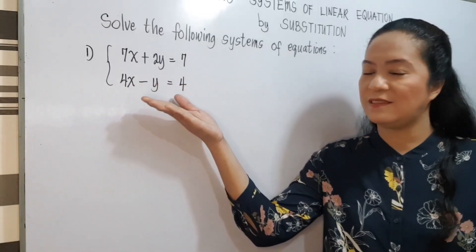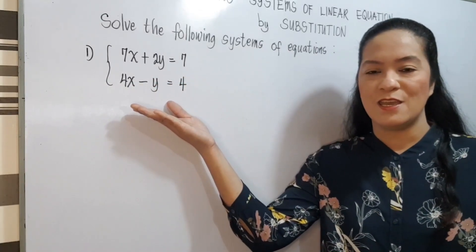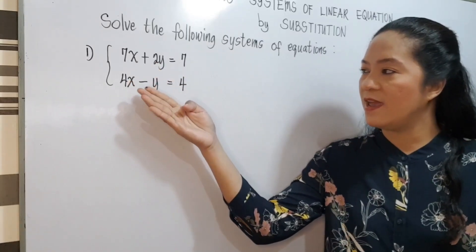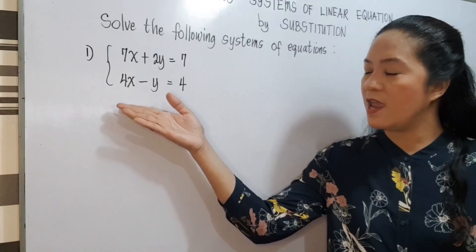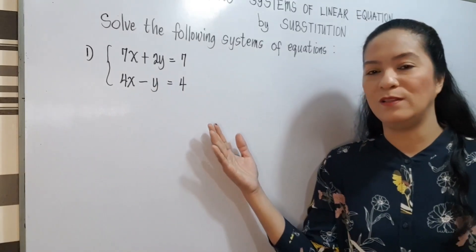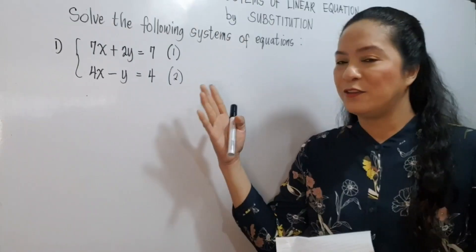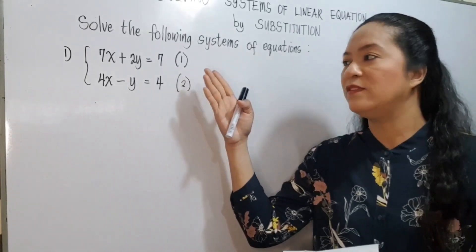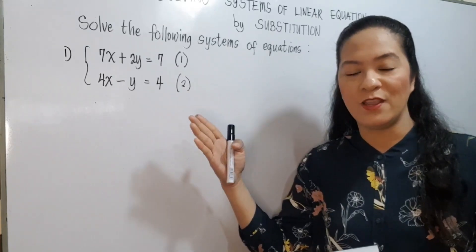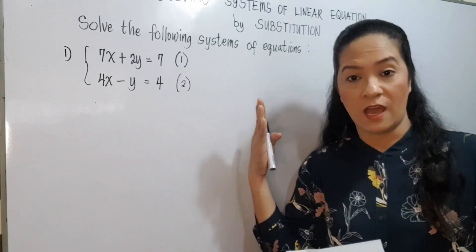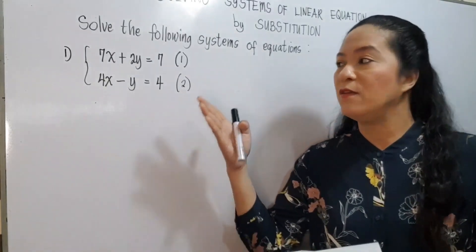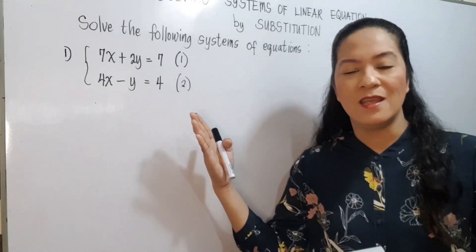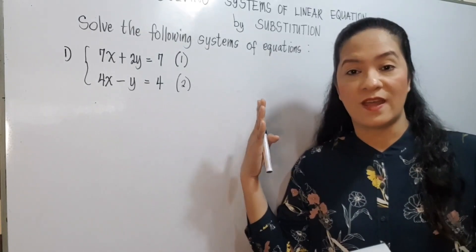Let's try to solve this system of equations using substitution. We have 7x plus 2y equals 7, and 4x minus y is equal to 4. The first step is to solve one of the equations for one variable in terms of the other. If possible, we choose the equation where we can avoid fractions.